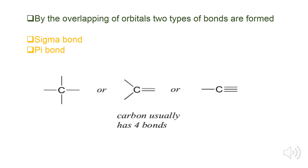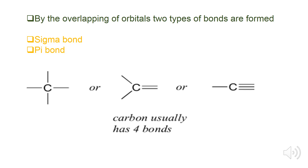By the overlapping of orbitals, two types of bonds are formed: sigma bond and pi bond. Note that carbon always forms four bonds, either in the form of single covalent bonds, double covalent bonds, or triple covalent bonds.